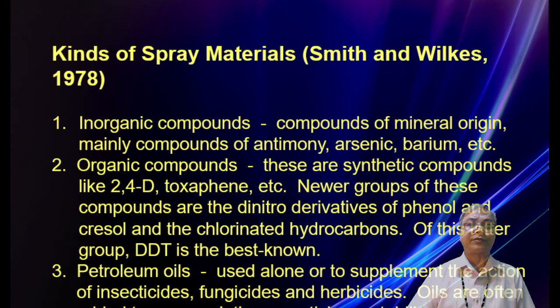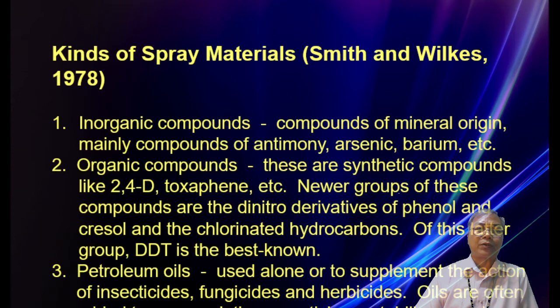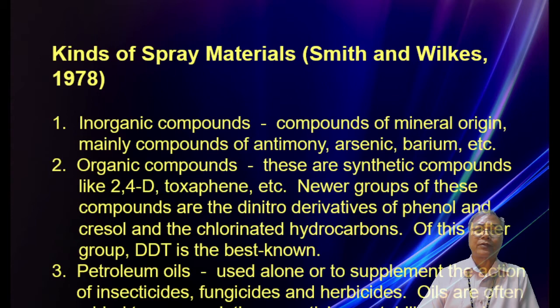Kinds of spray materials: Number one is inorganic compounds — compounds of mineral origin, mainly compounds of antimony, arsenic, and barium. These are dangerous because they can affect our lungs. Number two is organic compounds — synthetic compounds like 2,4-D. The newer groups include dinitril derivatives of phenol and cresol, and chlorinated hydrocarbons, of which DDT is the best known. Number three is petroleum oils, used alone or to supplement the action of insecticides and herbicides. Oils are often added to spray solutions as spreaders, stabilizers, and conditioning agents.